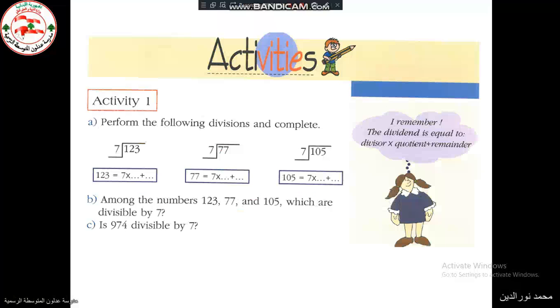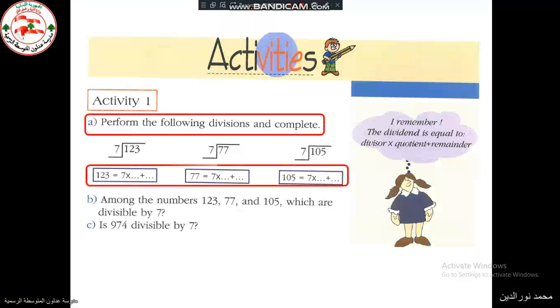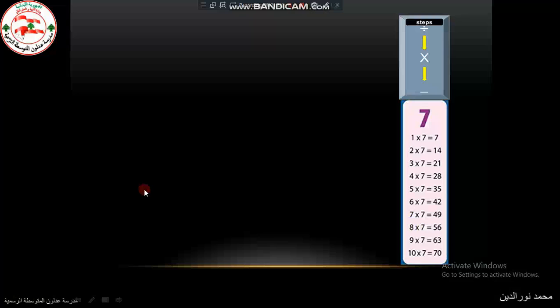Let's do first the activities in our books. Perform the following divisions and complete. We have to complete these equalities. We should use this equation: divisor times quotient plus remainder equals the dividend. So D equals divisor times quotient plus remainder. And in each equality, we have to put the quotient and the remainder.